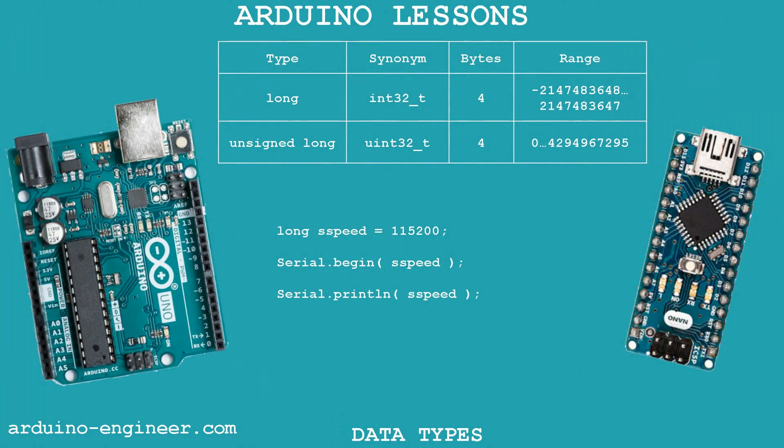The long and unsigned long types are used when the size of an int is not enough. They also contain integers, but unlike ints they take up to 32 bits of memory each. In variables of this type you can store, for example, the baud rate of the UART port, a phone number, the number of milliseconds – such large numbers in projects are not common, but they do happen.